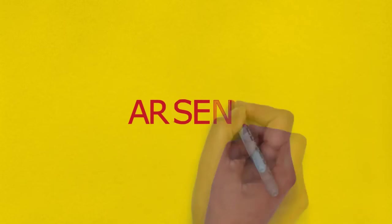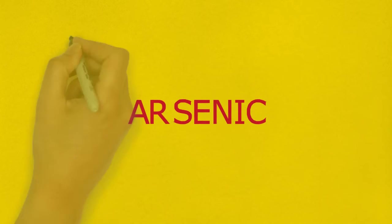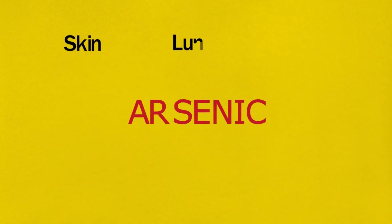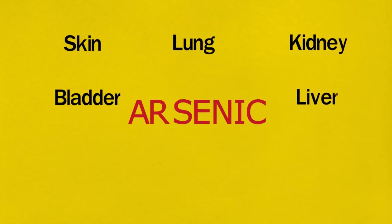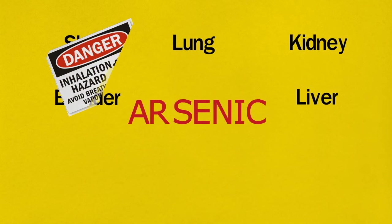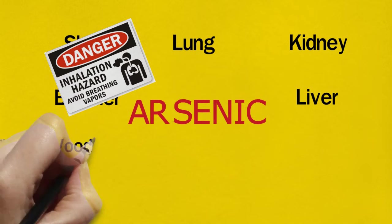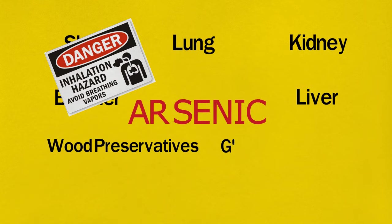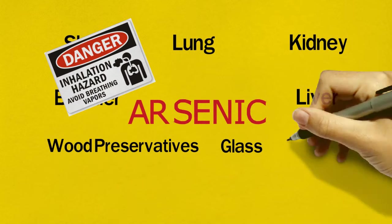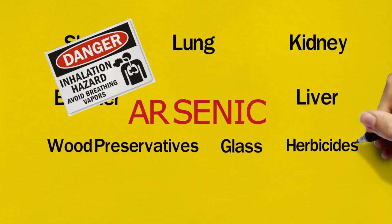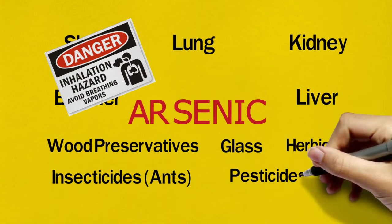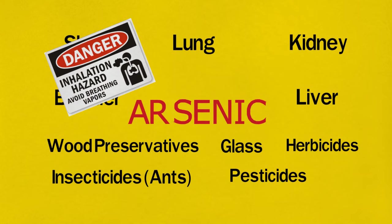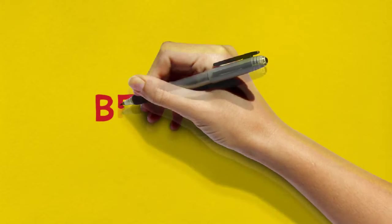Arsenic is a metal associated with many forms of skin, lung, bladder, kidney, and liver cancers, particularly when high levels are consumed in drinking water. It is a lung cancer hazard in occupational exposure when inhaled, especially in the mining and copper smelting industries. Arsenic is also used in the production of wood preservatives, glass, herbicides, insecticides especially ant killers, and pesticides, and it is a general environmental contaminant of air, food, and water.